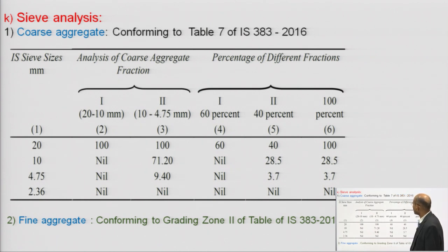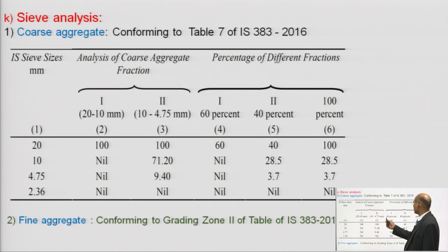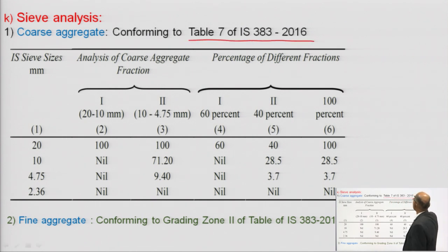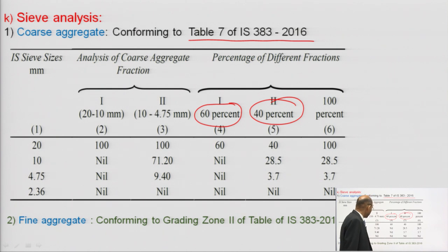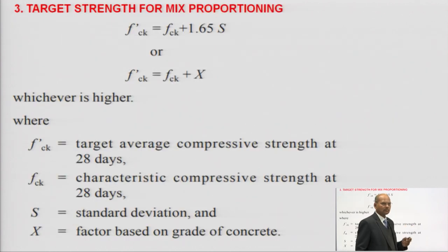Sieve analysis data is available for coarse aggregates in two parts: 20 to 10 mm size and 10 to 4.75 mm size, as per table number 7 of IS 383:2016. Their proportion is 60% of 20 to 10 mm size and 40% of 10 to 4.75 mm size. For fine aggregate, sieve analysis was done and from table number 9 of IS 383:2016, the grading zone is Zone 2.